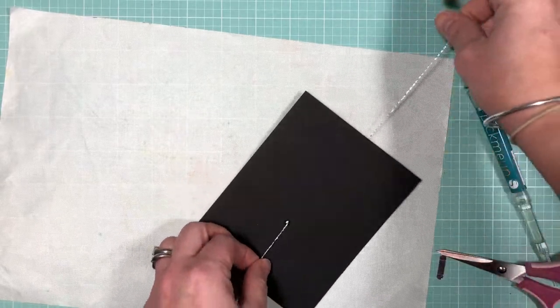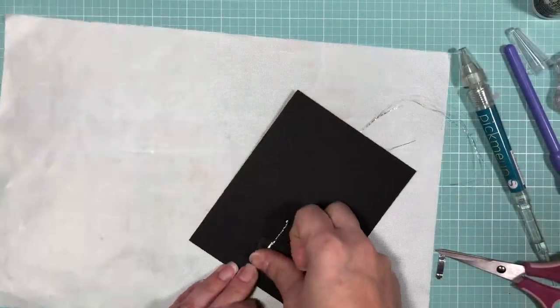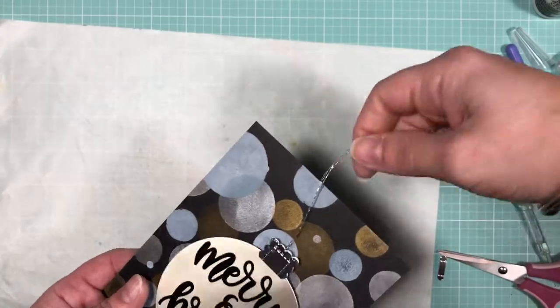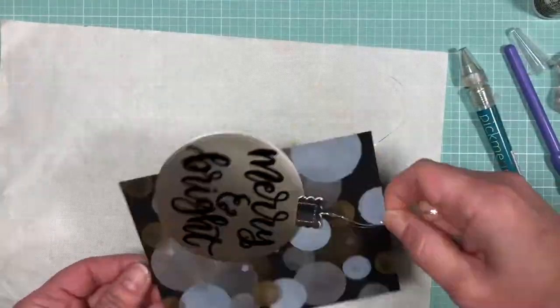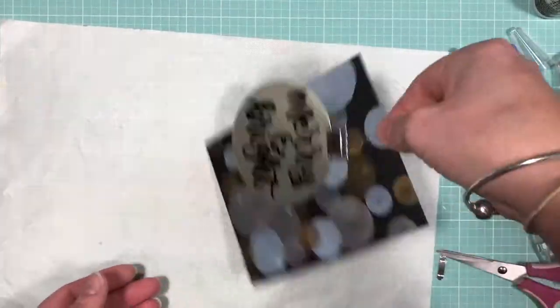Before adhering the thread to the back of the panel, you want to make sure you leave enough slack for the ornament to swing back and forth without going over the edges of the card too much. Next, you'll want to adhere the top of the thread to the center of the panel.